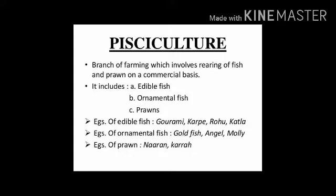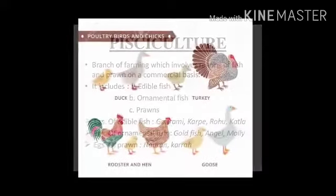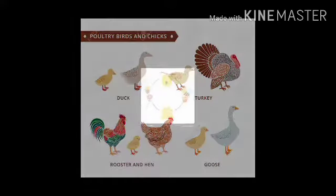The next are egg producing animals. The egg producing animals include hen, duck, turkey, and goose. The practice of keeping and breeding of egg producing animals is called poultry farming.